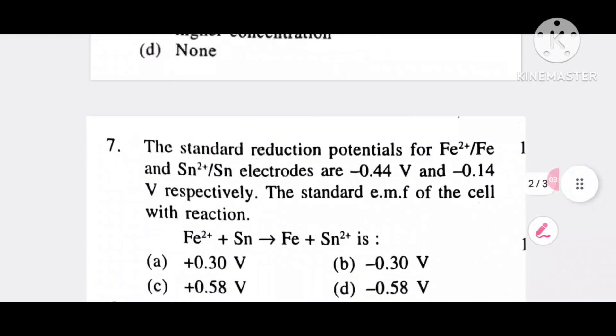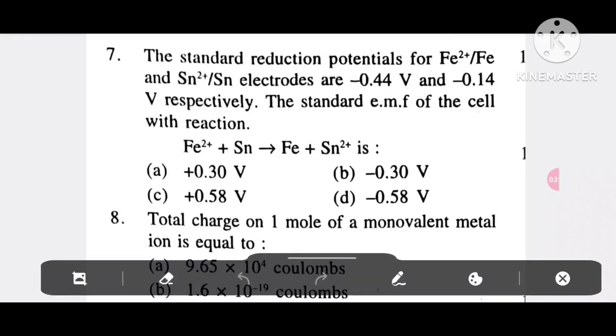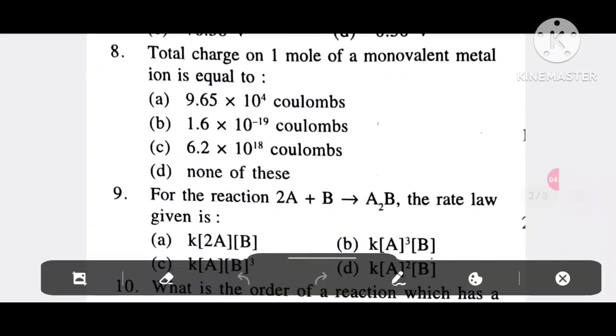Question 7: The standard reduction potential are +0.44V and -0.14V respectively. The standard EMF of the cell with reaction is option A, 0.30V; option B, -0.30V; option C, 0.58V; option D, -0.58V. It is option A, 0.30V.